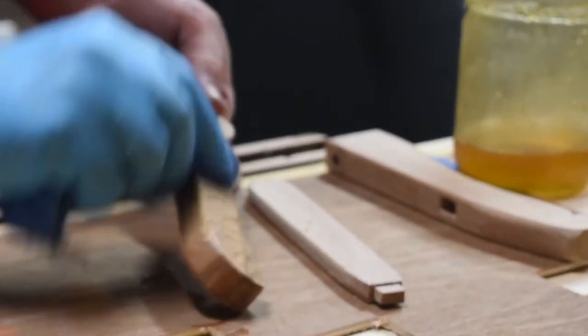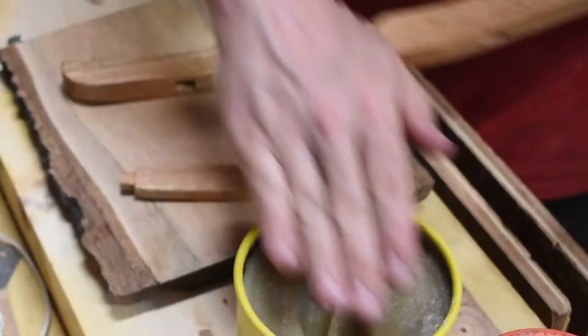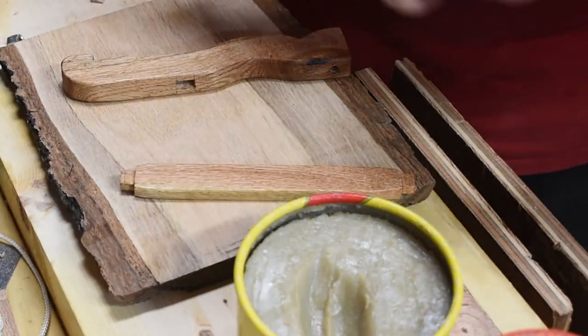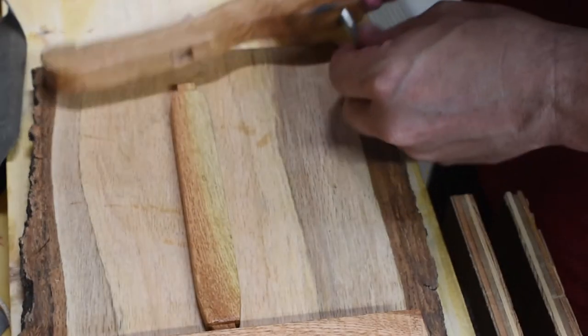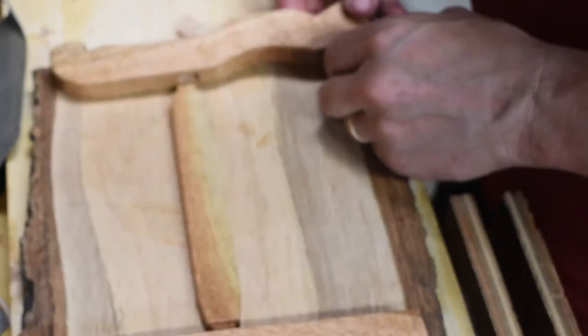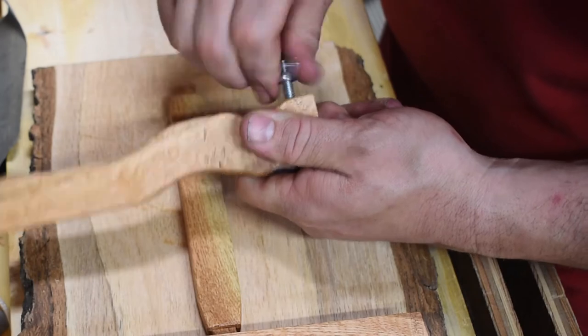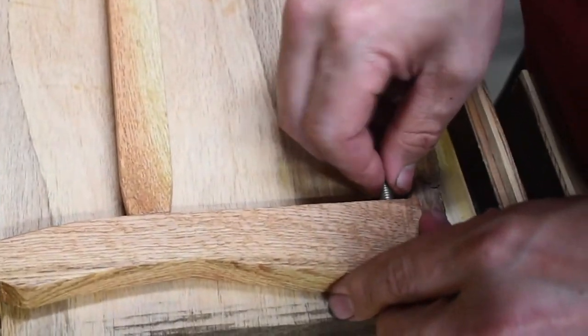So here I am applying a coat of boiled linseed oil to all the parts as well as a good coat of Johnson's paste wax once the boiled linseed oil is dry. And here I am installing the bolts and wing nuts that are going to be used to hold the saw blade on.